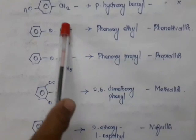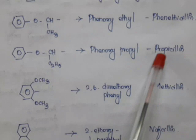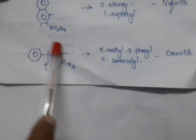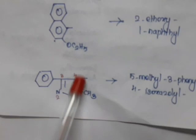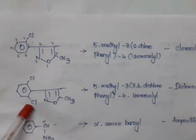When R = phenoxyethyl, it is phenoxyethyl penicillin. When R = phenoxypropyl, it is propicillin. When R = 2,6-dimethoxyphenyl, it is methicillin. When R = 2-ethoxynaphthyl (position 1), it is nafcillin. When R = 5-methyl-3-phenylisoxazol-4-yl, it is oxacillin. When R = the same group with one chlorine at position 2 of the phenyl ring, it is cloxacillin. When R = two chlorines at positions 2 and 6 of the phenyl ring, it is dicloxacillin.